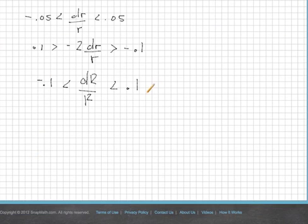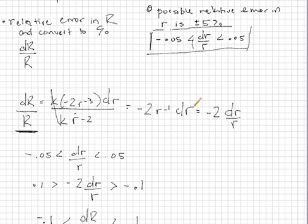Now we're going to go ahead and convert this to a percent. So we get 10%, negative 10%. So it looks like our percentage error in big R is plus or minus 10%. And that will be the final answer for this question. Thanks again for your question. And I look forward to answering more of your questions using SnapMath in the future.